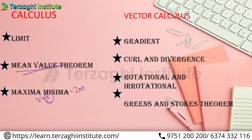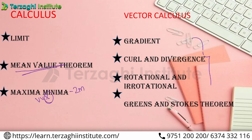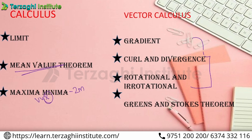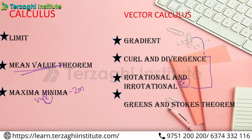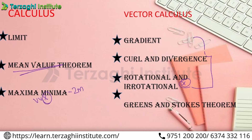Next, you have Vector Calculus: Gradient, Curl and Divergence, Rotational and Irrotational. You don't need to cover all three points in great depth — just a few hours and it's easy to finish. Rotational and Irrotational are very, very important. Next, Green's and Stokes' theorems — we will sort this in the important part. Start everything; it's all important.